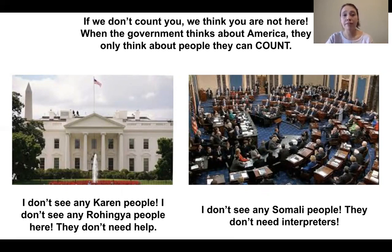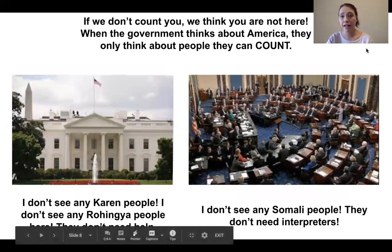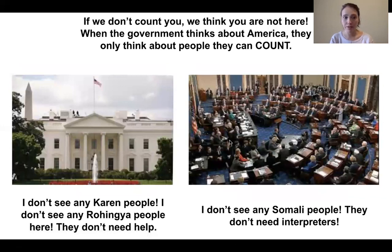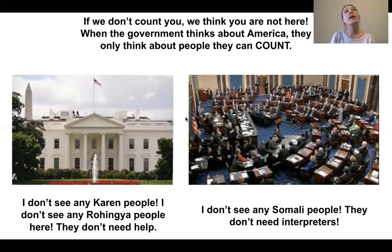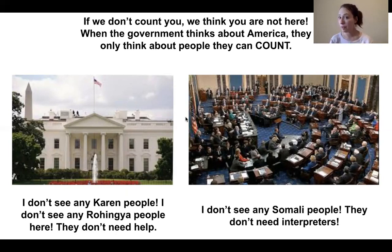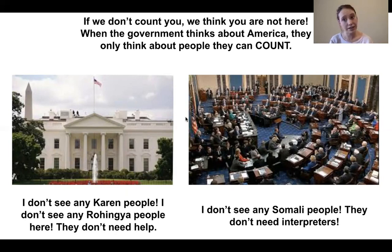When the government thinks about America, they can only think about people they can count. For example, maybe the government looks and says: I don't see any Korean people, I don't see any Rohingya people — they don't need help. I don't see any Somali people — they don't need help.